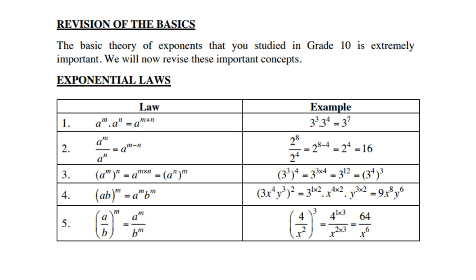The second law: division. a to the power m divided by a to the power n — we subtract the exponents, giving a to the power m minus n. For example, 2 to the power 8 divided by 2 to the power 4 is 2 to the power 8 minus 4, which is 2 to the power 4, which equals 16.